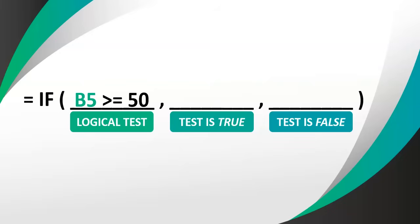So if B5 is greater than or equal to 50 and that is true, maybe I want to display the word 'pass' — because it's for a test. I put the word in double quotes. So if the value in B5 is, for example, 86, that is greater than 50 — true — so it will display the word 'pass' in the cell where this formula occurs. But if the value in B5 was 40, that's not greater than or equal to 50, so it skips 'pass' and moves to the false part — the third parameter — and displays the word 'fail'. That's how an IF statement works.